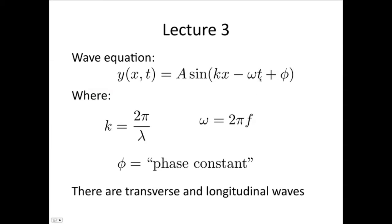If kx and ωt have opposite signs, then the wave is traveling to the right. If kx and ωt have the same sign, then the wave is traveling to the left in the negative direction. φ is the phase constant, which we can use to make our wave match any initial conditions that we're given.